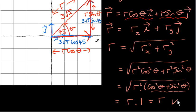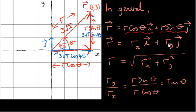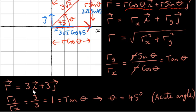Another thing to notice is that if we take ry and divide by rx, we get r sin theta over r cos theta. Since sin theta over cos theta is tan theta, we have a way to find the angle between the positive x-axis and the vector. In our example, r is 3i plus 3j, so ry over rx is 3 over 3, which is 1. We put this equal to tan theta. We know that theta is acute because the head of vector r is in the first quadrant. So theta is 45 degrees because the tan of 45 degrees is 1.